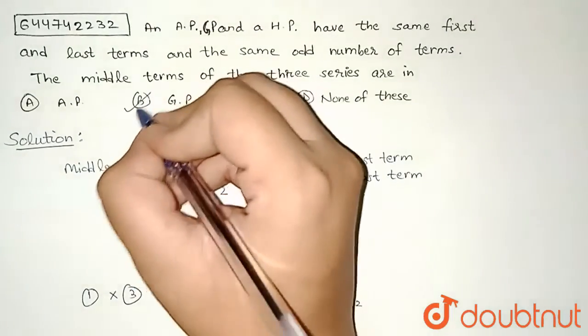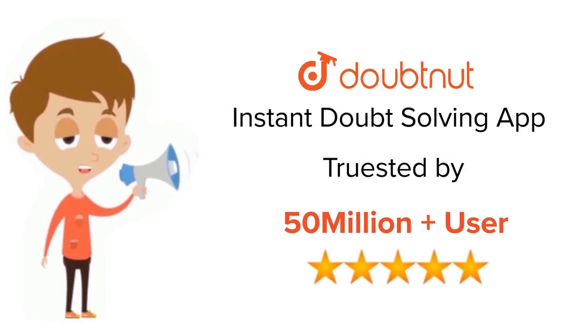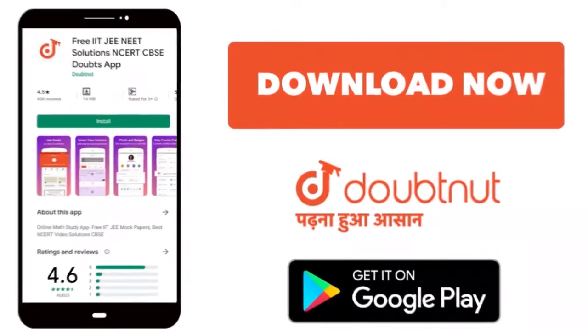For class 6 to 12, IIT-JEE and NEET level, trusted by more than 5 crore students. Download DoubtNet app today.